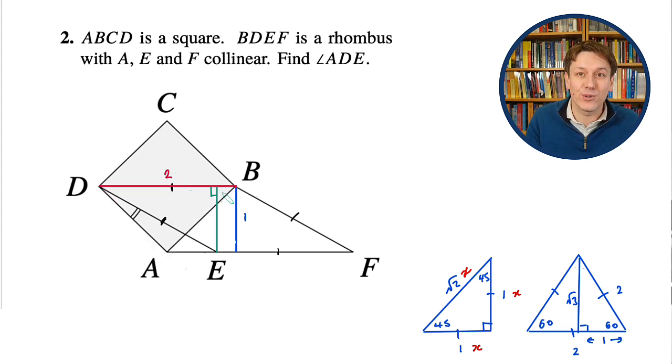But if we now look at the other right-angled triangle we had, we know that this length is also 1, it's going to be the same as the blue length that we've drawn in the right-angled isosceles triangle there. And because BDEF is a rhombus, so this length here is also 2.